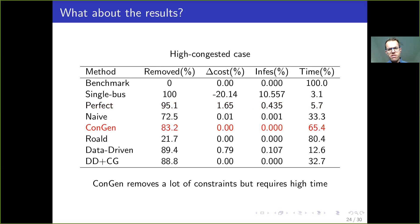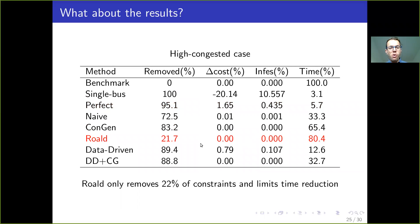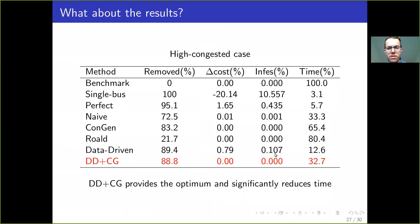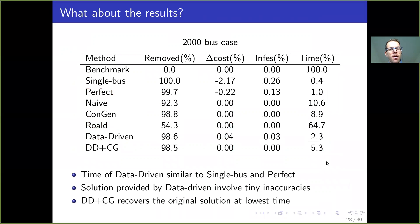In the high congestion case, the constraint generation method achieves the original solution but time reduction is not very impressive because of the iterative procedure. The Roald method only removes around 22% of constraints, so time reduction is not high either. The data-driven method provides good results with very impressive time reduction, at the expense of some inaccuracies in the objective function and some infeasibilities. However, combining the data-driven method with constraint generation yields the original solution requiring only about 32% of the original computational time.